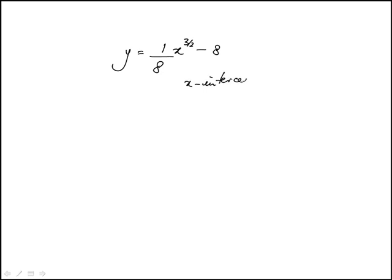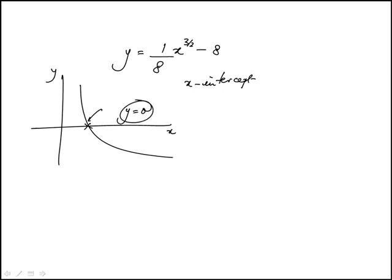The x-intercept is where the function intersects the x-axis, where y = 0. So we set this equal to 0 and find the corresponding value of x.